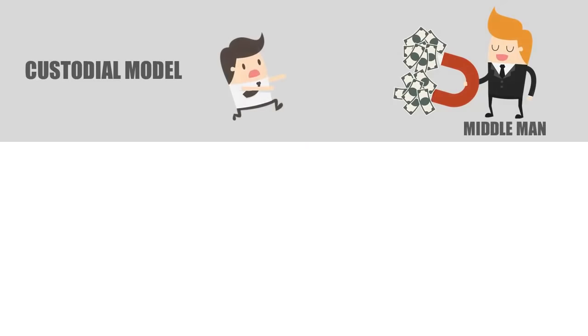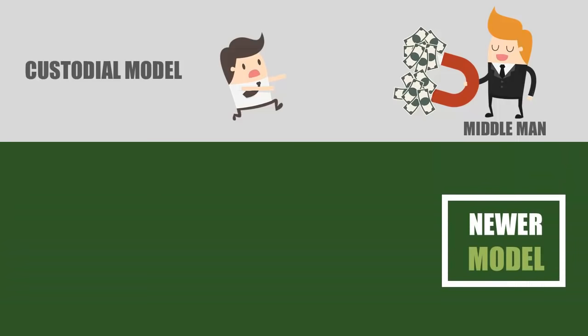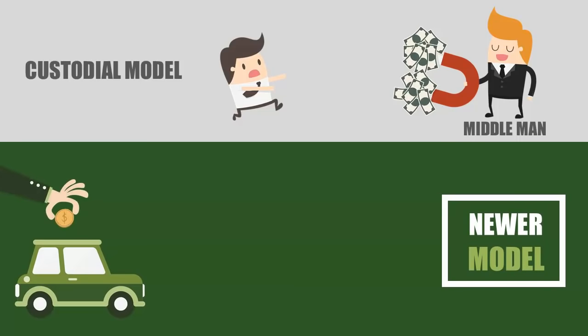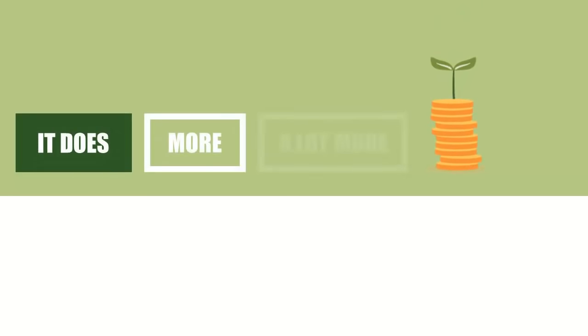In the newer model, we create a vehicle—a legal entity—for you to take your money out of a third party's hands and into your own. In short, it does more, a lot more, and costs less, a lot less.